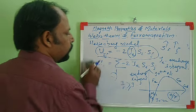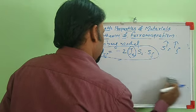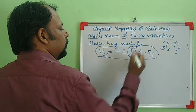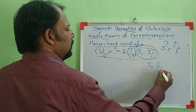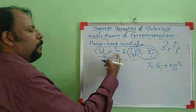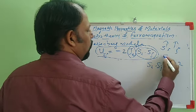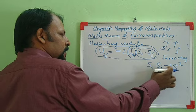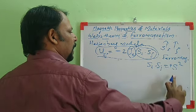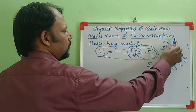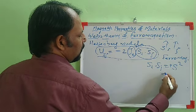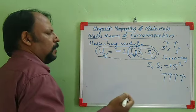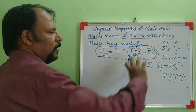For ferromagnetic materials such as iron, nickel, and cobalt, the exchange integral J is positive. For a stable system the energy should be minimum, which means the energy -2J S_i·S_j should be negative. If J is positive, then S_i·S_j should be +S², meaning the spins align along the same direction. So in ferromagnetic material, the tendency of adjacent dipoles is to align in a specific direction.